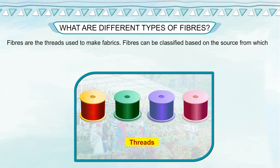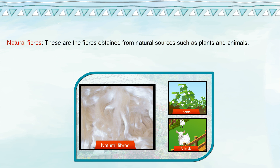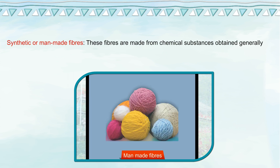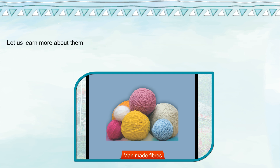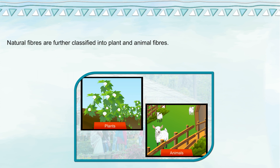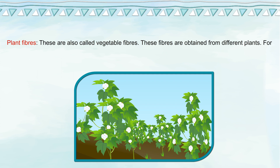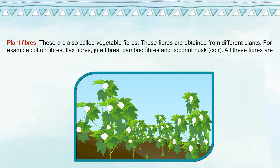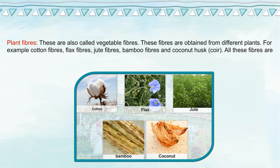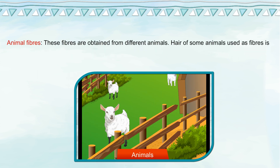What are the different types of fibers? Fibers are the threads used to make fabrics. Fibers can be classified based on the source from which they are derived. Broadly, the classifications are: natural fibers — obtained from natural sources such as plants and animals; and synthetic or man-made fibers — made from chemical substances obtained generally from petroleum. Natural fibers are further classified into plant fibers and animal fibers. Plant fibers, also called vegetable fibers, are obtained from different plants — for example, cotton, flax, jute, bamboo, and coir. All these fibers are made of cellulose, which is a carbohydrate.